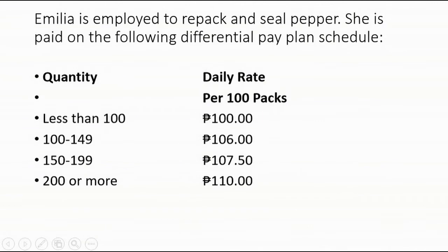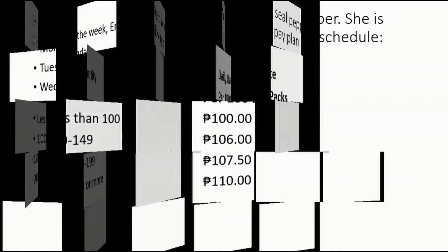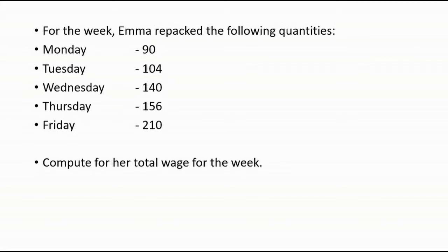Next problem. Emilia is employed to repack and seal pepper. She is paid on the following differential pay plan schedule: Quantity and daily rate per 100 packs. Less than 100 is 100 pesos, 100 to 149 is 106 pesos, 150 to 199 is 107 and 50 centavos, 200 or more is 110 pesos. For the week, Emma repacked the following quantities: Monday 90, Tuesday 104, Wednesday 140, Thursday 156, and Friday 210. Compute for her total wage for the week.